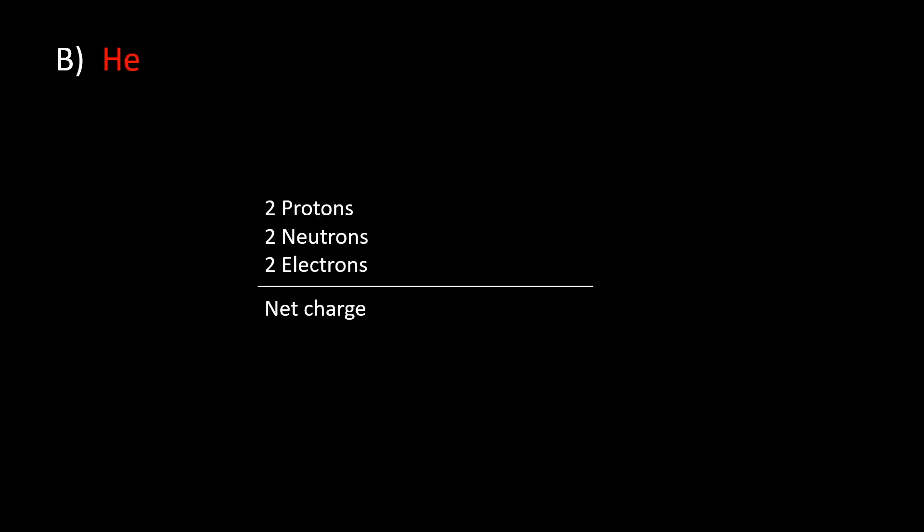For atom B, the net charge is also zero Coulombs. Since there are two hydrogen atoms, there are two protons, two electrons, and two neutrons. The charges cancel out, leading to a net charge of zero.